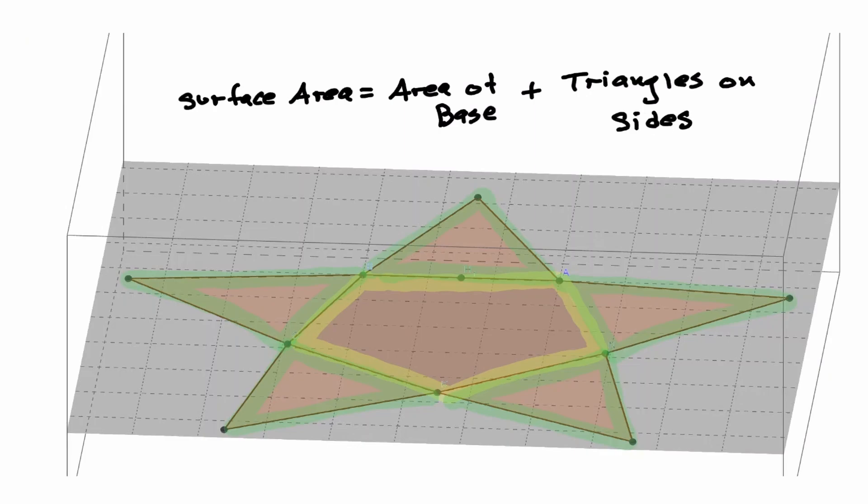Well, one thing to notice is that the number of triangles in a pyramid will always match with the number of sides in our base. Notice that this base has 1, 2, 3, 4, 5 sides, and that's as many triangles as we have.